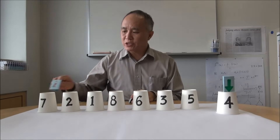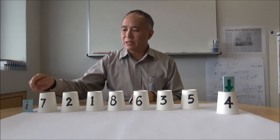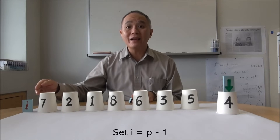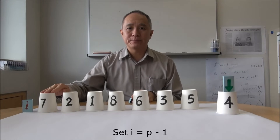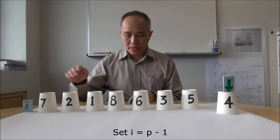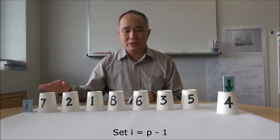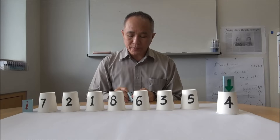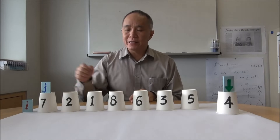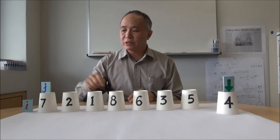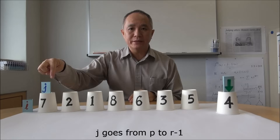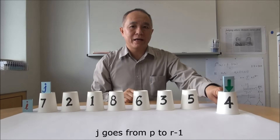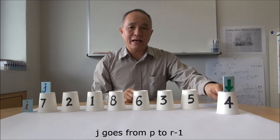We have two counters. One of them is i. We start by putting i as one less than the position of the first element. And j is the other counter that will run from the first element to one less than the last element.